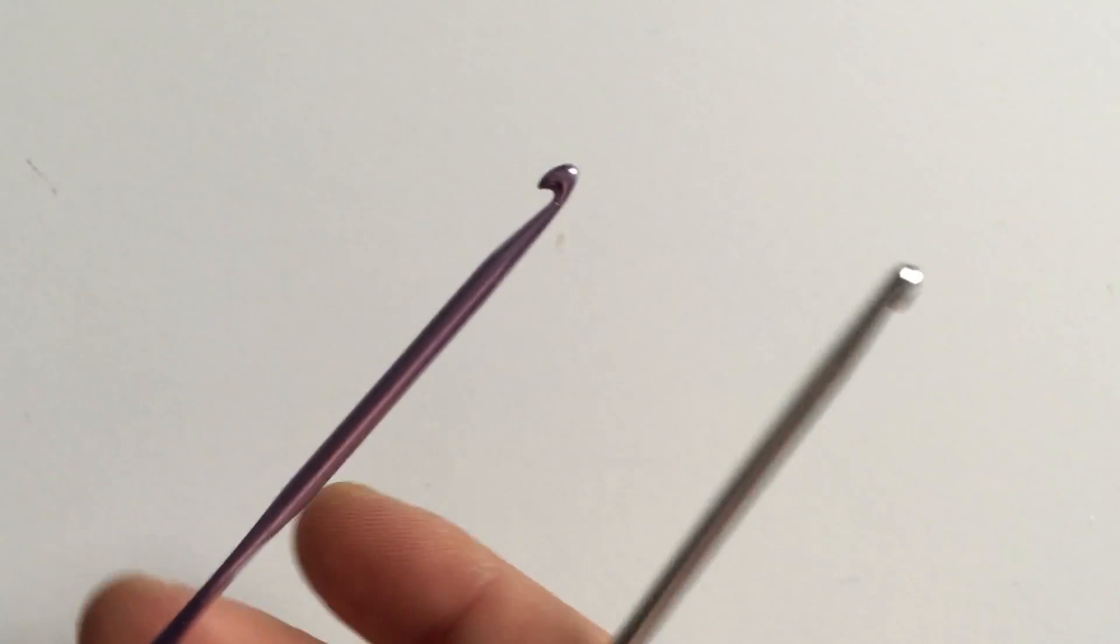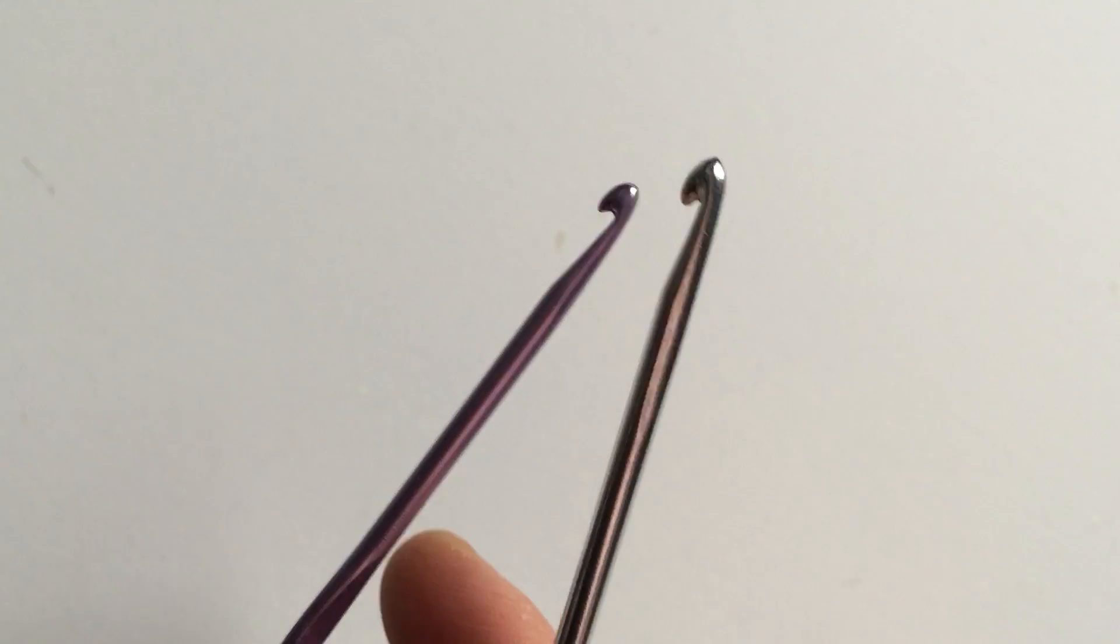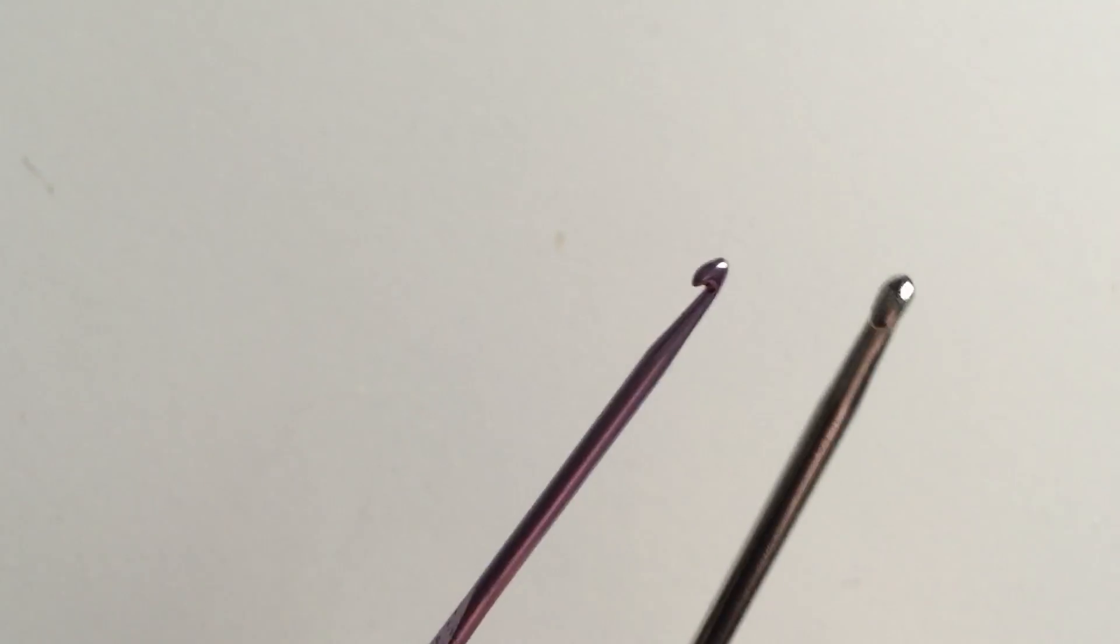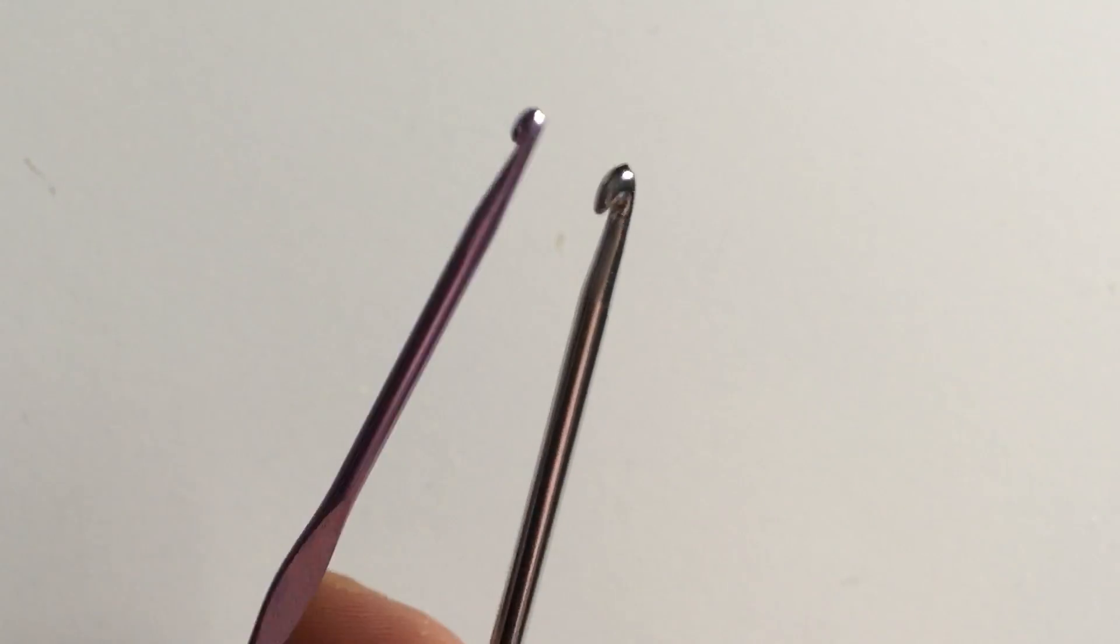This pattern requires two different size hooks: a bigger one and then a slightly smaller one with a half millimeter difference. If you don't have the correct sizes, just make sure there's a half millimeter difference between the two.